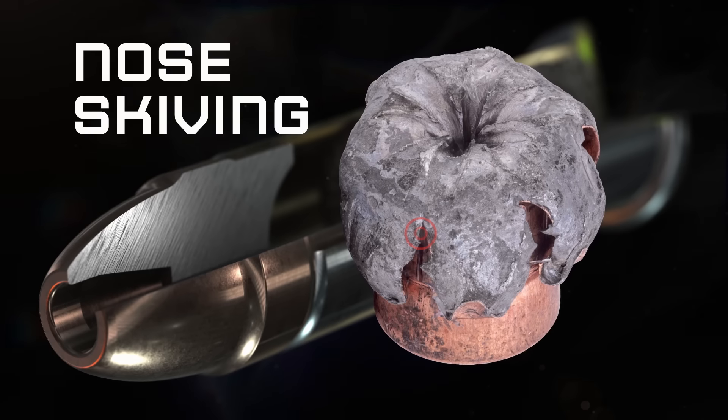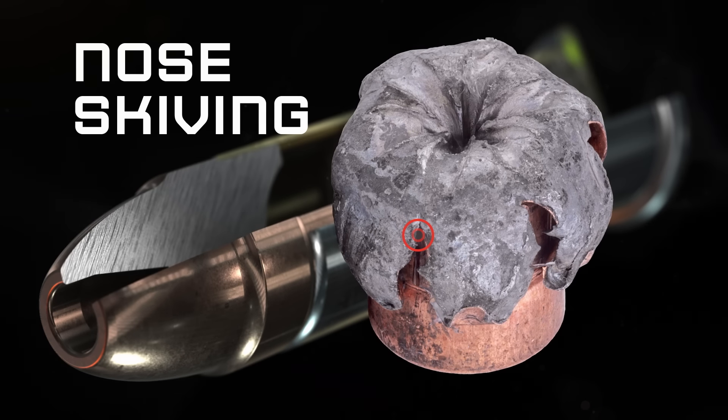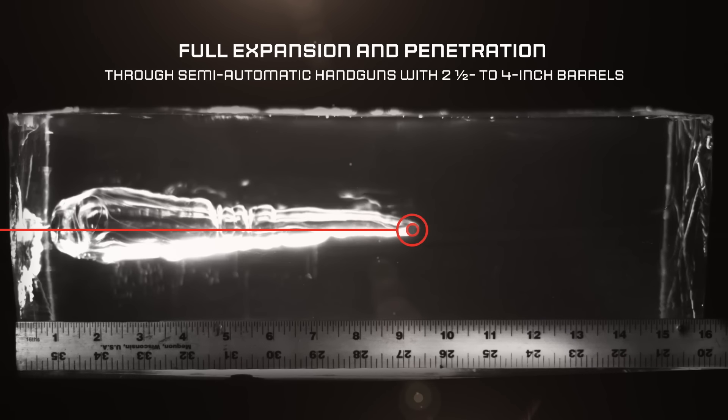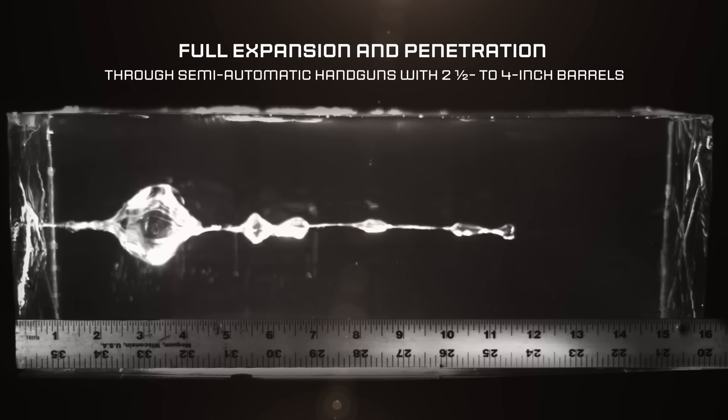Uppercut's jacketed hollow point bullet features nose skiving that initiates full and reliable expansion through short-barreled handguns while retaining the weight needed to hit critical penetration depths.